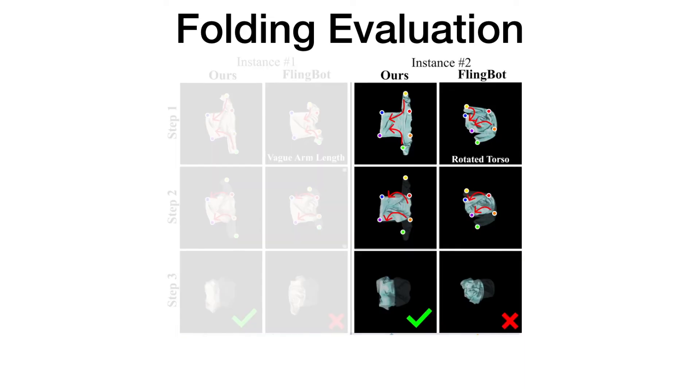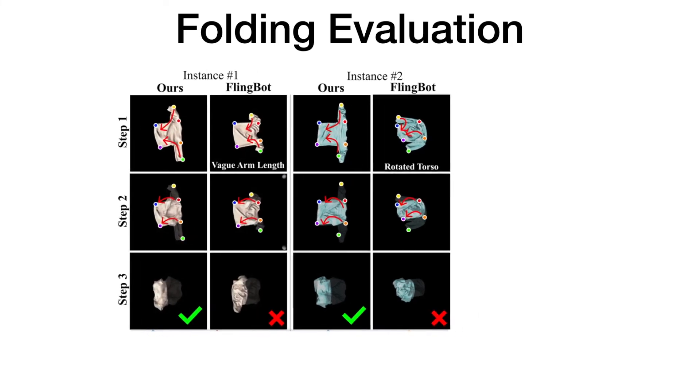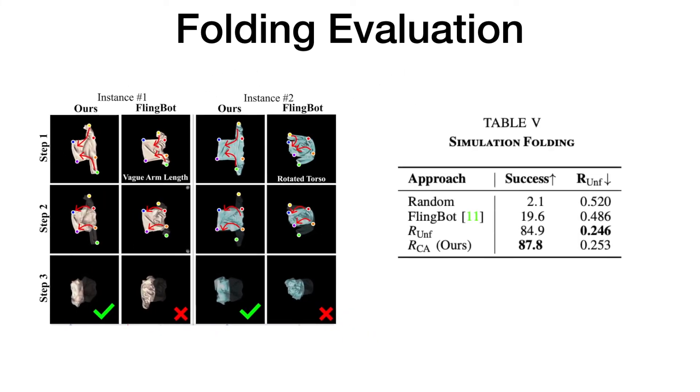Whereas on the right comparison, we see that Flingbot's result has a rotated cloth torso, which leads to suboptimal folding shape, whereas our method folds the shirt almost perfectly. These differences are reflected in the folding success rate, where our method is able to beat Flingbot by a large margin.